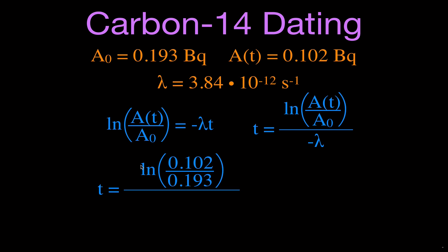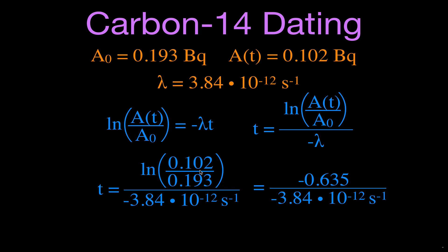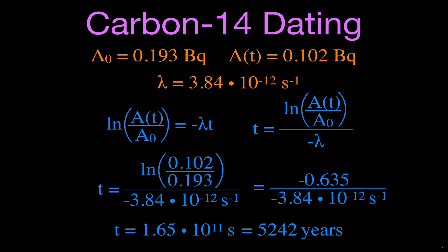Plugging in the values: T = ln(0.102 / 0.193) / (−3.84×10⁻¹²). First find the fraction, then take the natural log, which gives −0.639. Dividing −0.639 by the negative decay constant (negative divided by negative equals positive) gives T = 1.65×10¹¹ seconds. Converting that to years gives 5,242 years. So as of 1991, Otzi had died 5,242 years ago.